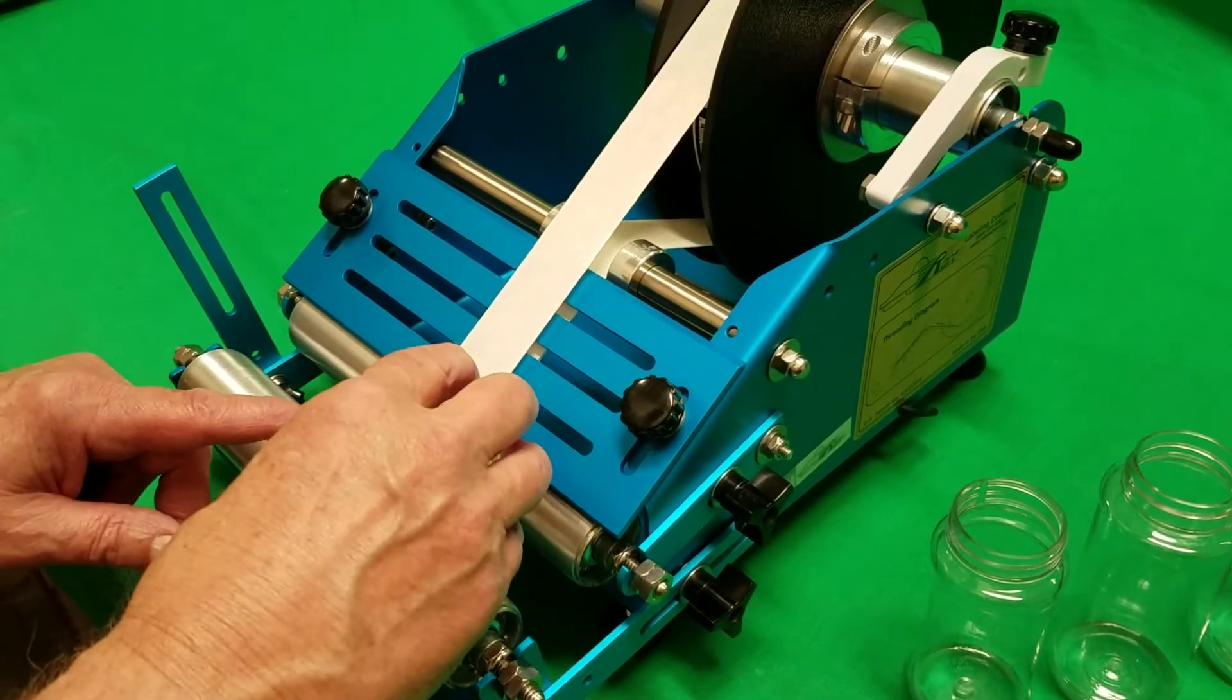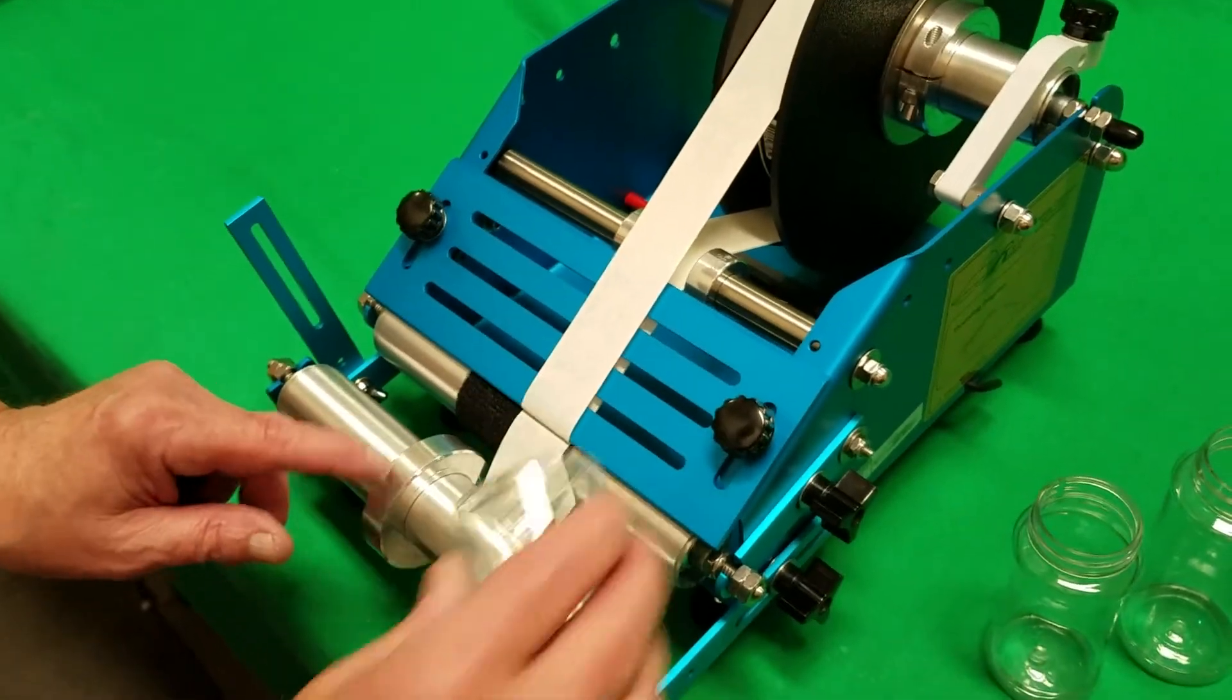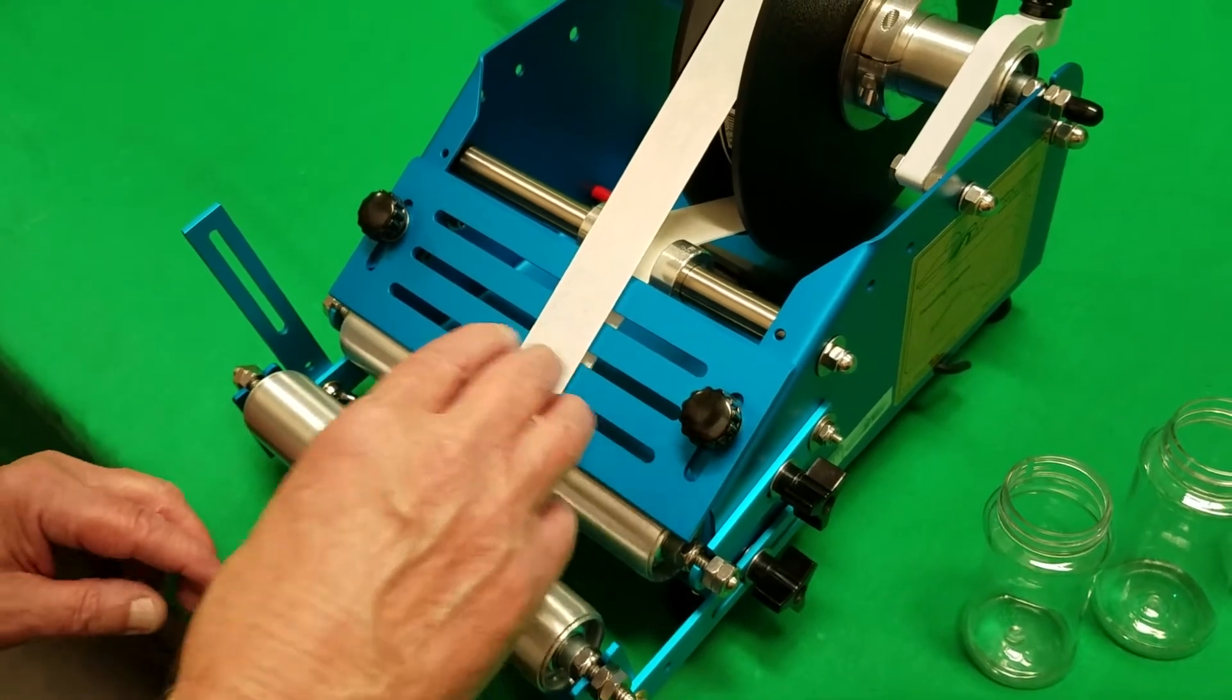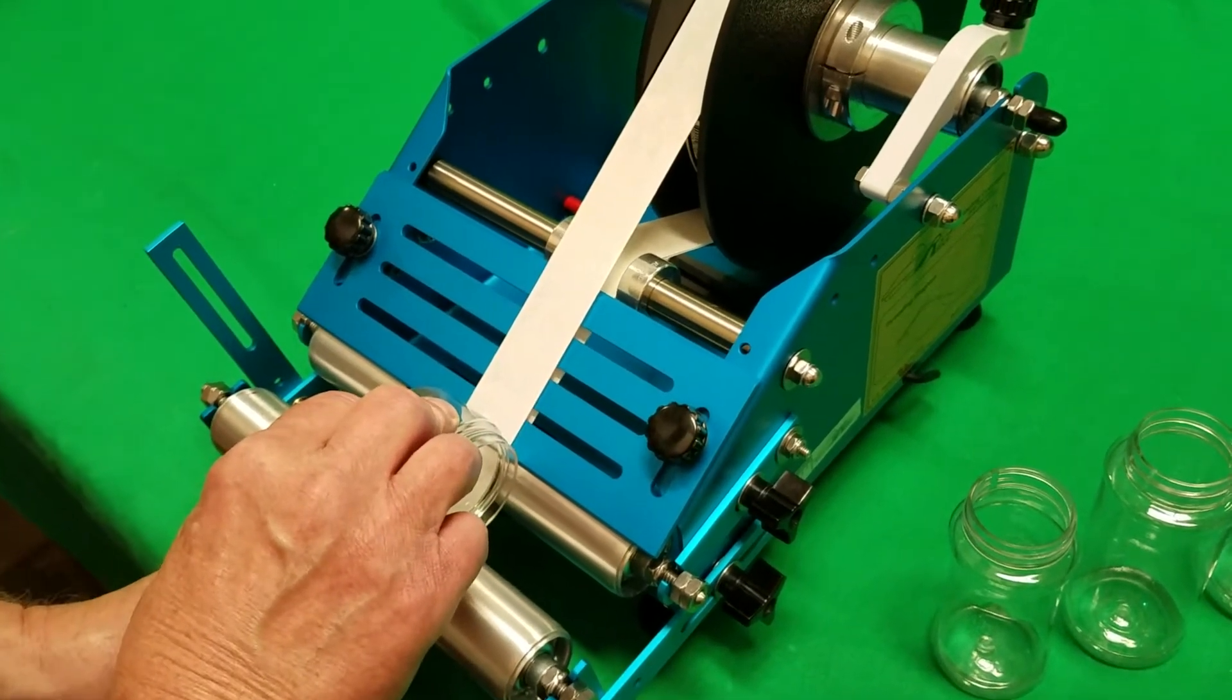The container goes into the cradle area up against the bottle stop which is this right here. Put it into the cradle area.